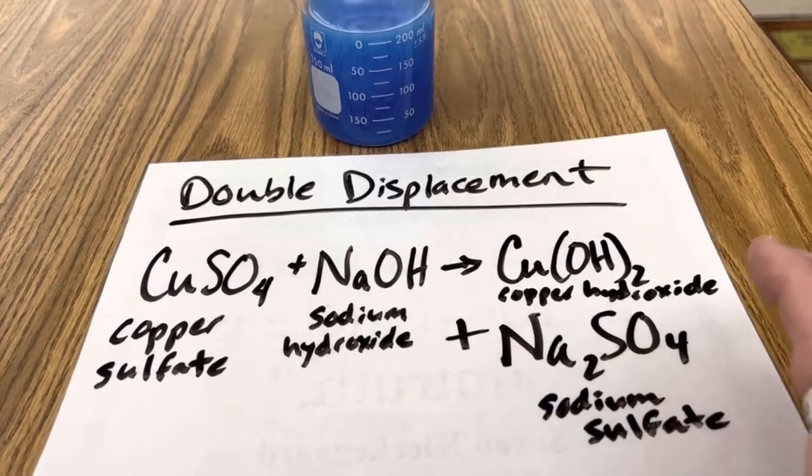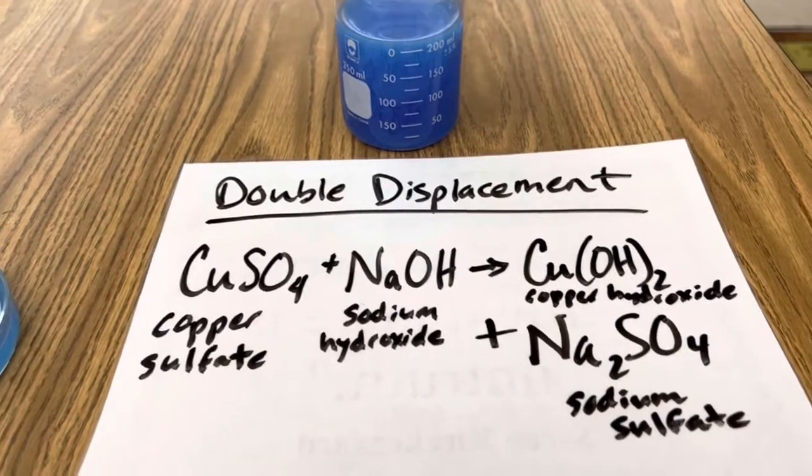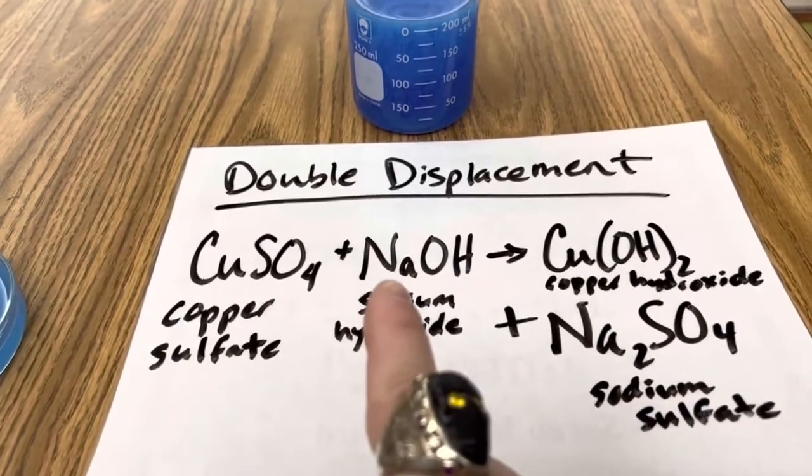Remember, in a double displacement reaction, you're trading metals for metals, non-metals for non-metals, and your equation always write the metals first.